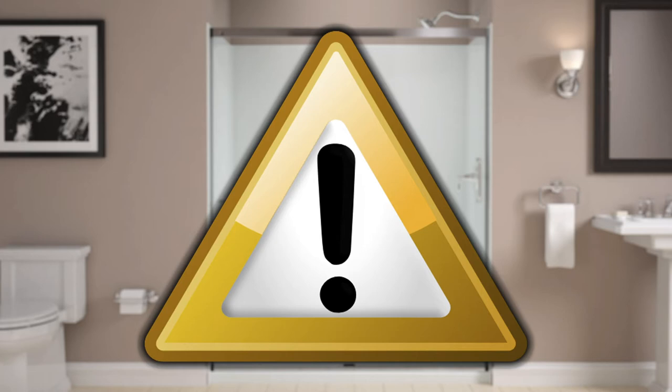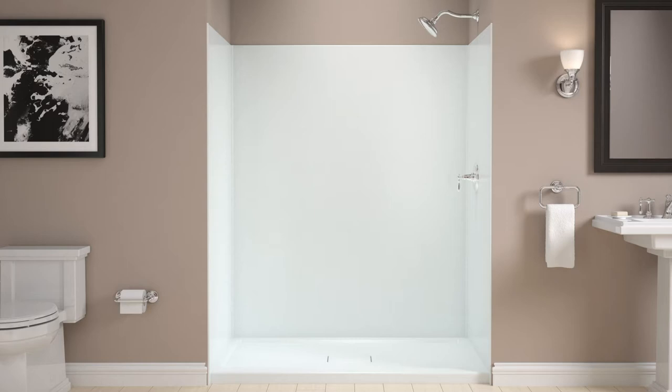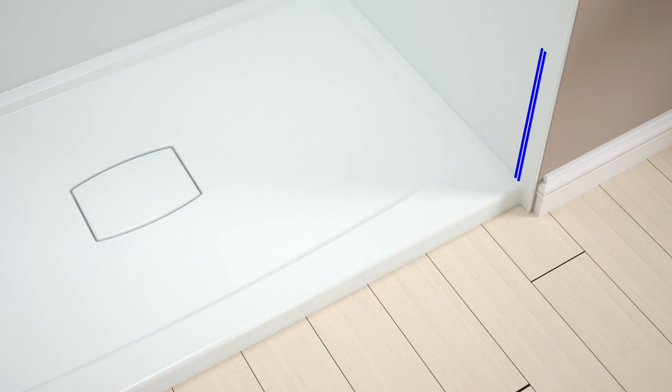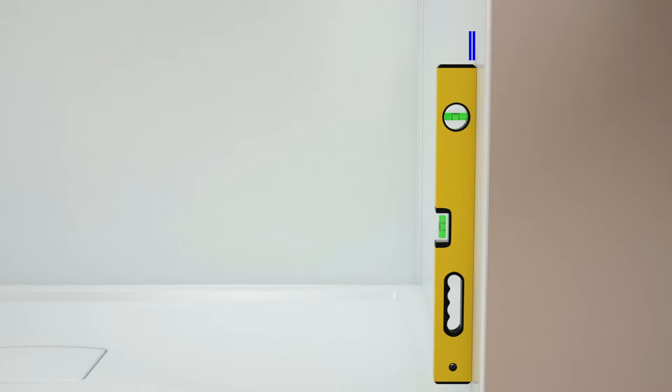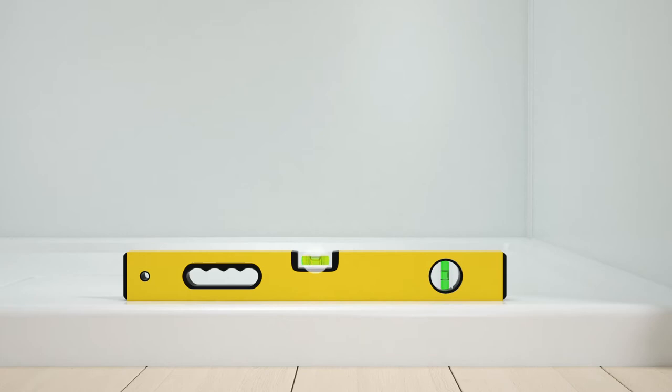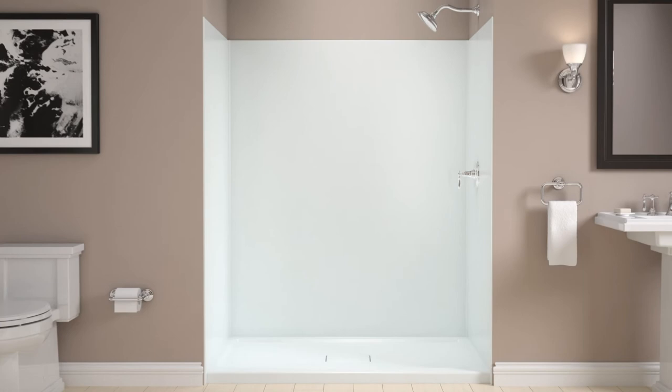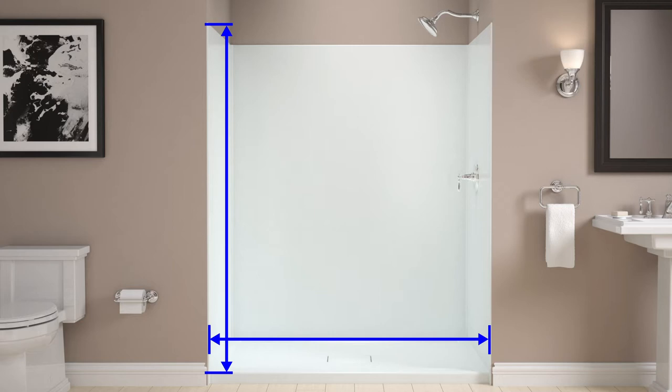Before you begin the installation, confirm the bath or shower ledge and wall meet the following requirements: the ledge has at least 2¼ inches of flat surface; the wall must have at least 2⅞ inches of flat surface; the radius where the ledge meets the wall must be a half inch or less; the walls must be within 3⅛ inches of plumb; and the shower ledge must be level. Confirm that the door is correctly sized for your bath or shower. Refer to the Shower Space Measurement Video for Kohler Sliding Doors to determine what size door is right for your showering space. Do not install the door if any of these requirements are not met.